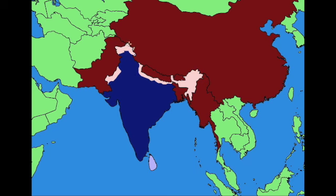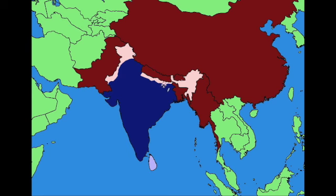India liberates lands near the coast and reverses Bangladesh's gains, making the Bangladesh front stall out. But a big offensive is being made near the capital. India, seeing the enemy getting close to the capital, launches another counter-offensive pushing them back to China's border, while Nepal continues their offensive trying to get behind India's lines.